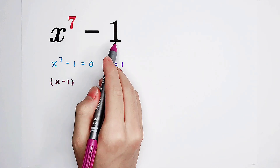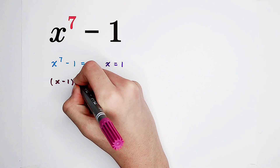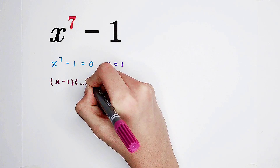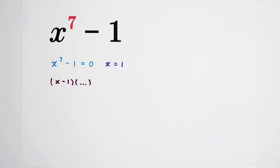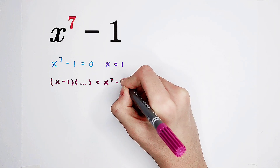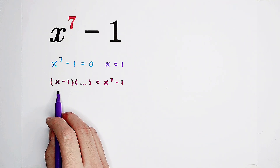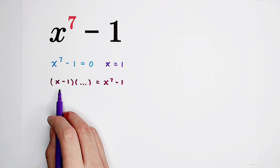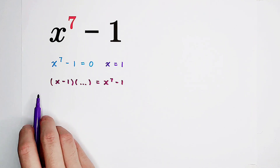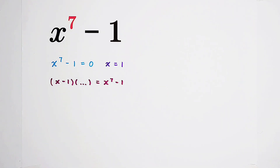So x to the power of 7 minus 1 has to be written as x minus 1, then times something. This is our clue and this is our way, because in the last step x minus 1 can be taken out. So we can go along this clue and factorize x to the power of 7 minus 1. Let's do it step by step.